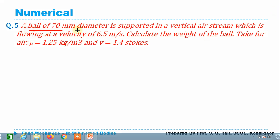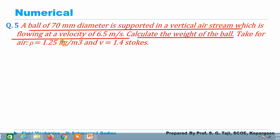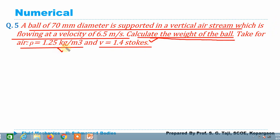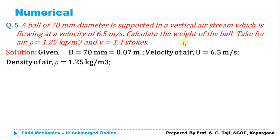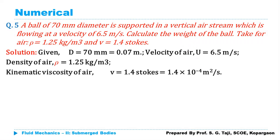It is given that a ball of diameter 70 mm is supported in a vertical air stream flowing at a velocity of 6.5 m/s. Calculate the weight of the ball. Take the density of air as 1.25 kg/m³ and kinematic viscosity as 1.4 stokes. The given data is: diameter 0.07 m, velocity 6.5 m/s, density 1.25 kg/m³.